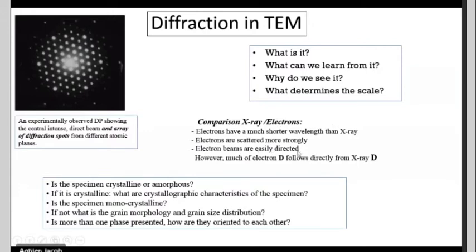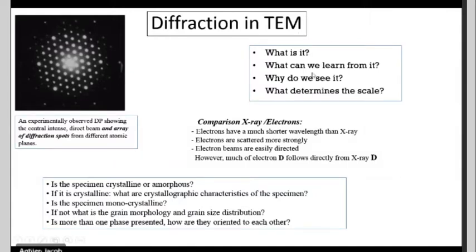Electron beams are easily directed using electromagnetic lenses — you can converge or diverge the beam. For example, if you want to see interfaces in the nano range, you can converge the beam and probe locally to get phase information locally. By looking at the diffraction pattern, we can determine whether the sample is crystalline or amorphous, monocrystalline or polycrystalline, and how grain morphology and grain size are distributed throughout the crystal.